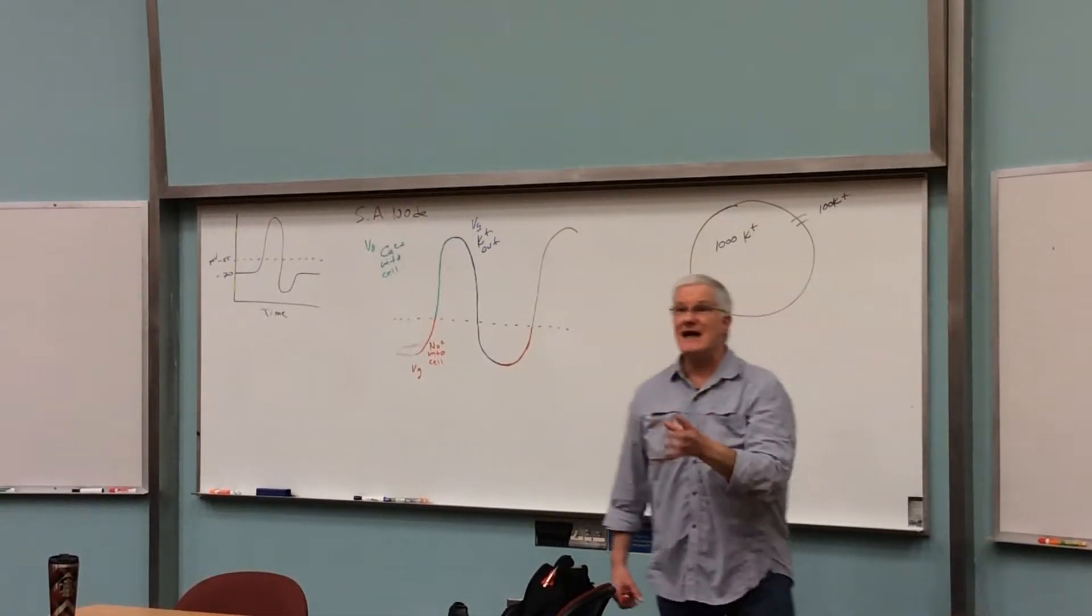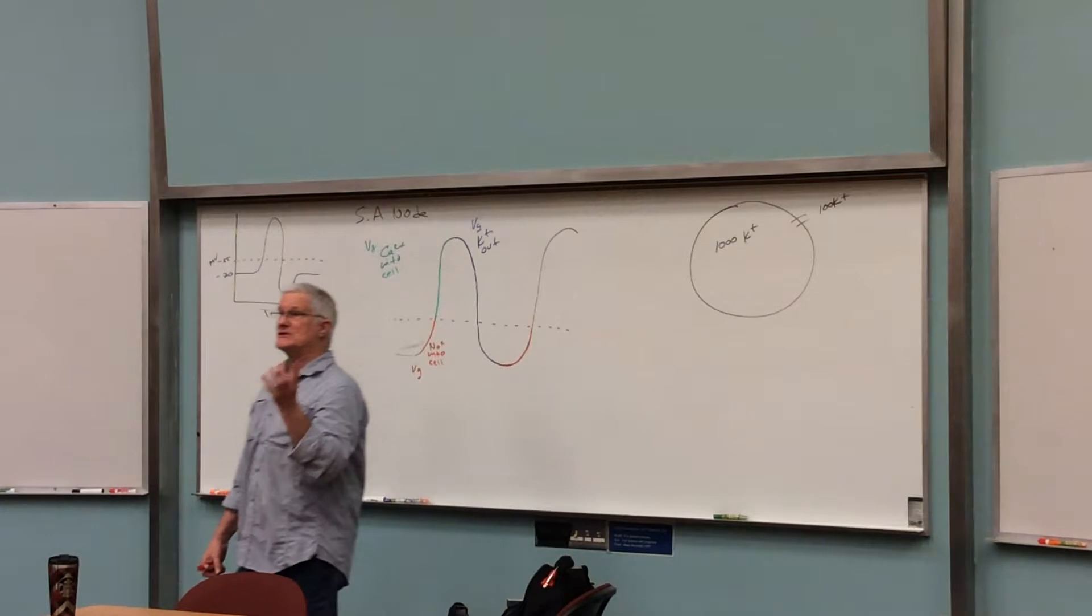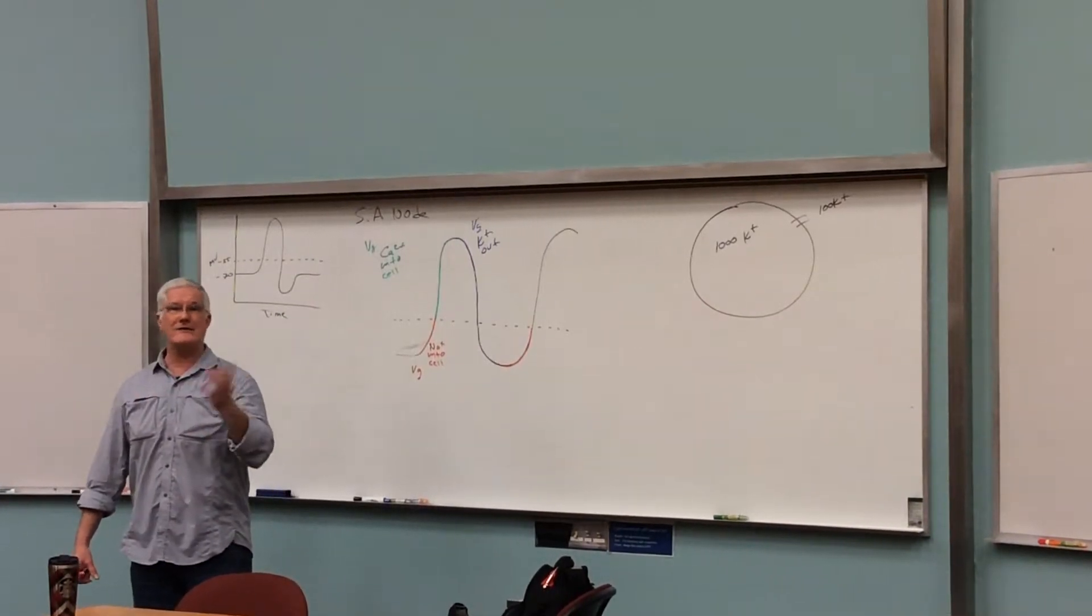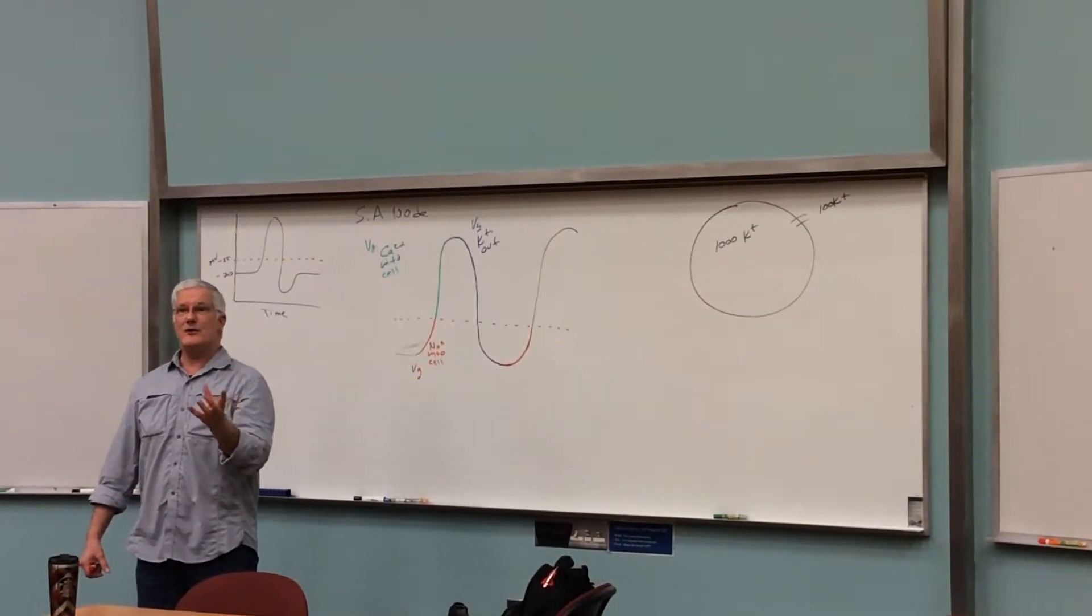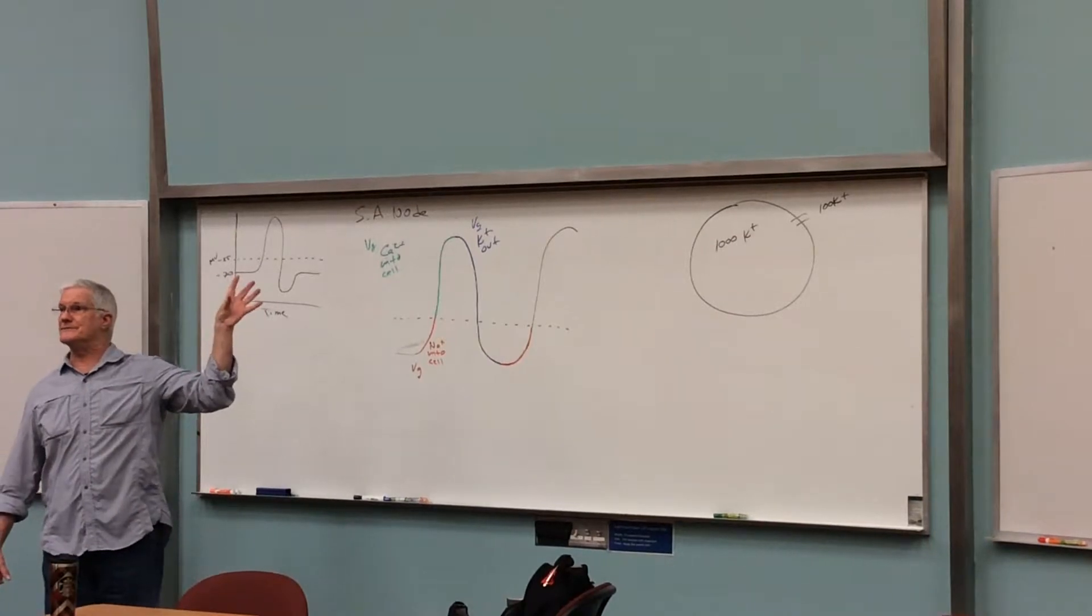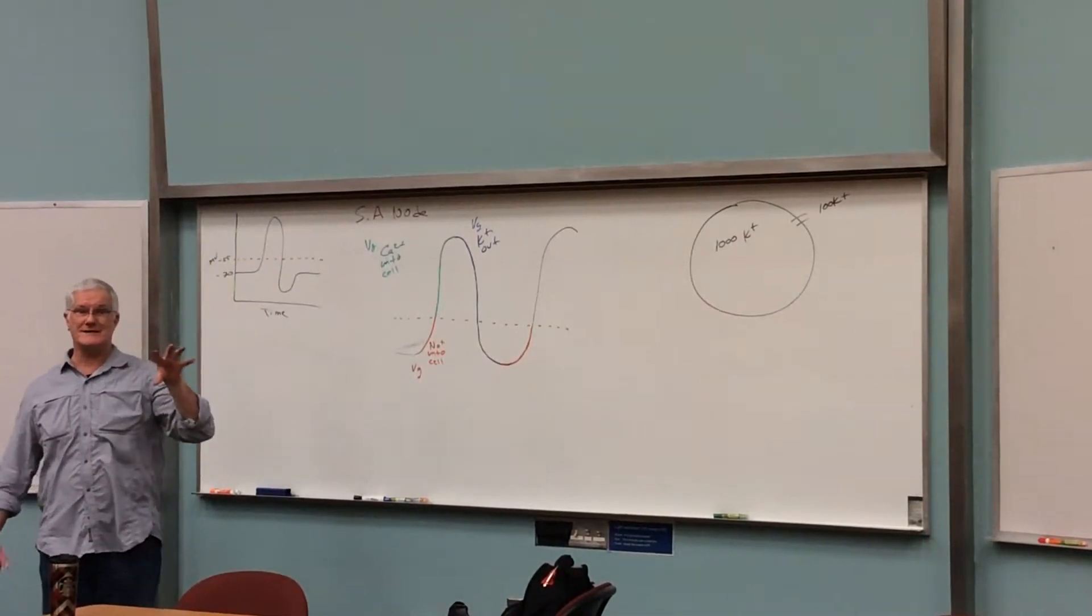But when you're eating 30 or 40 or 50 of them in a day, after many days, and they're great sources of potassium, he was consuming way higher than normal levels of potassium. No wonder his heart was having problems.